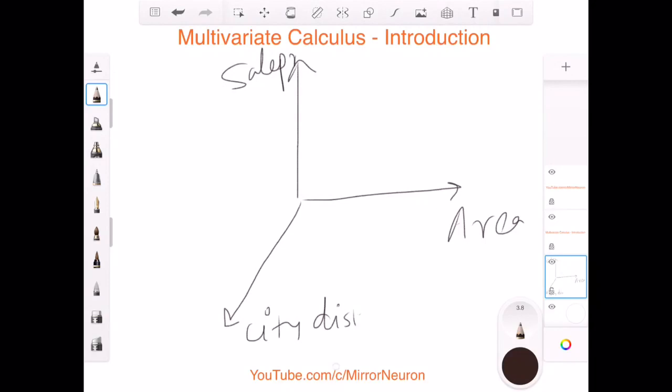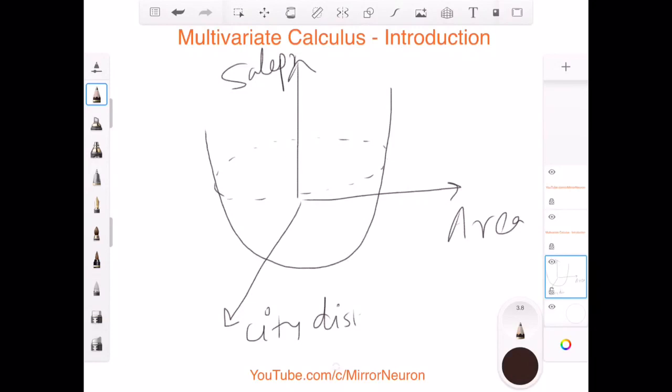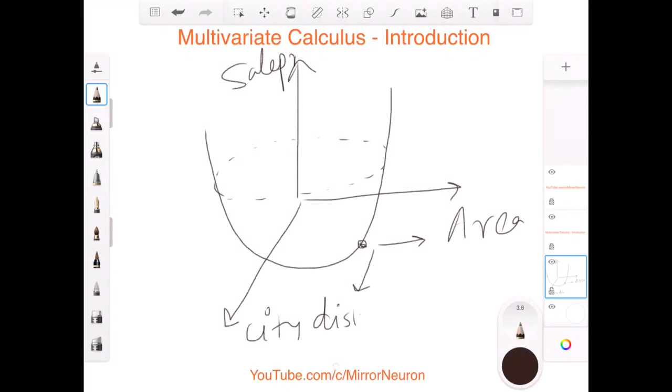And say for example, your graph now would look more like a surface instead of a single function. So basically, if I am looking at a particular point here, I not only want to study that if I change my area by a certain amount, how much is my function changing, I would also like to see if I change the distance, how is my function changing.